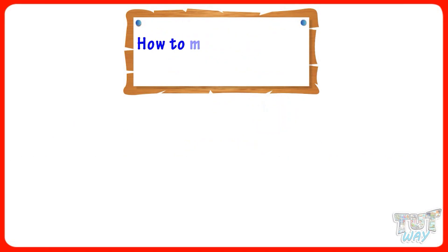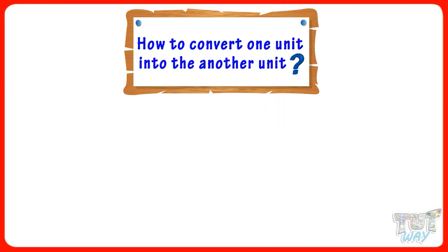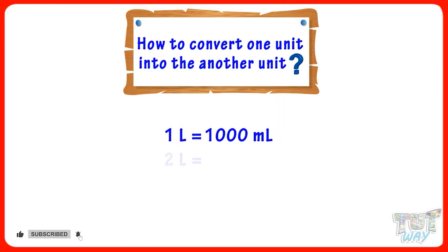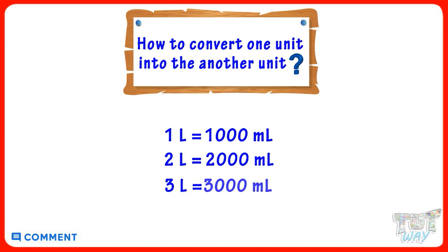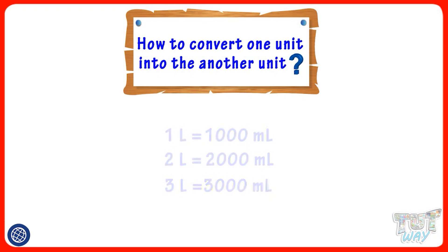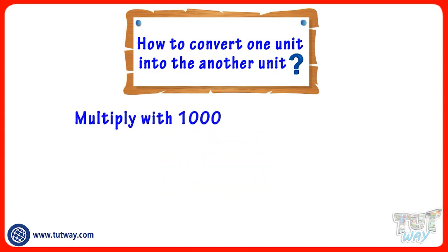Now let's learn how to convert one unit into the other. 1 liter equals 1000 milliliters. 2 liters equals 2000 milliliters. 3 liters equals 3000 milliliters. So we multiply by 1000 to convert liters to milliliters.